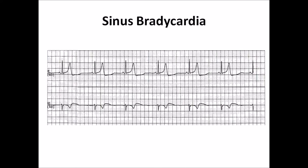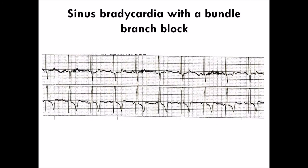This is sinus bradycardia. The P wave is upright in lead 2 followed by a QRS complex with a PR interval of about 0.16 seconds. The atrial and ventricular rates are about 38 beats per minute, computed using the small box method of 1500 divided by 39 small squares. This is sinus bradycardia with bundle branch block — leads 2 and V1 showing an upright P wave in lead 2 followed by a wide QRS with a QR pattern in V1. The PR interval is 0.20 seconds with a 1-to-1 atrial to ventricular ratio at a rate of about 56 beats per minute.